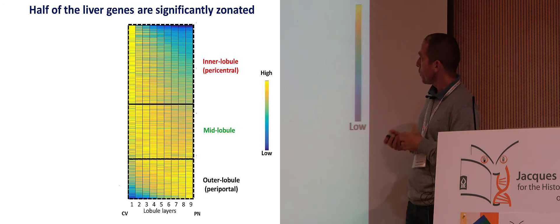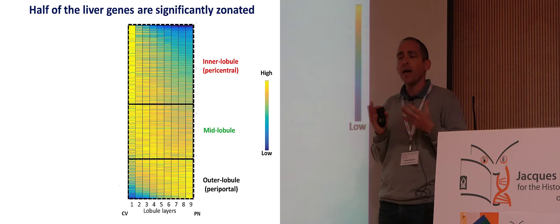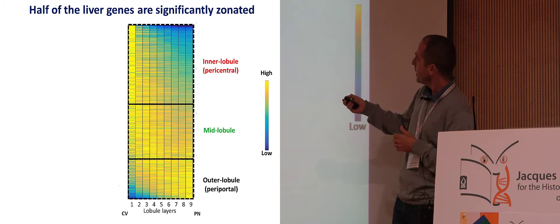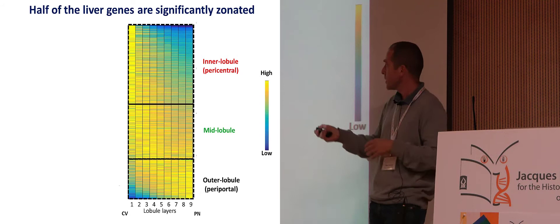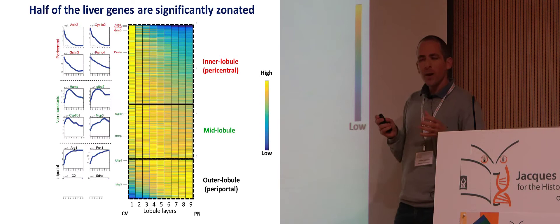What we got was very surprising. About half of the hepatocyte genes are non-uniformly expressed along the lobule axis. There are about 7,000 genes expressed in hepatocytes, and 3,500 of them are zonated. Every row is a gene, with the central vein on one side and the portal node on the other. Yellow is high expression, blue is low expression. This was surprising because previous estimates were about 300 zonated genes — we found 3,500.